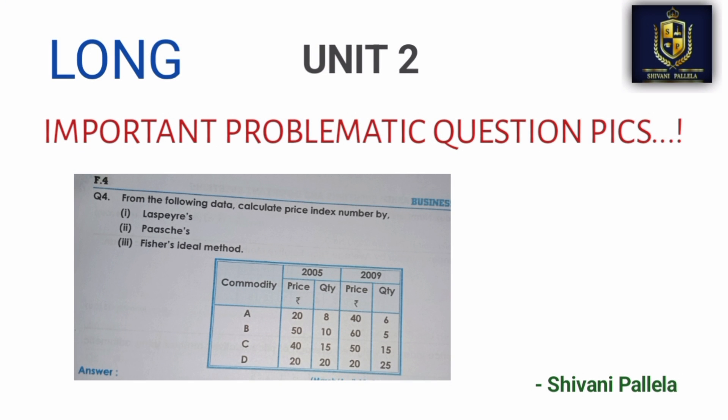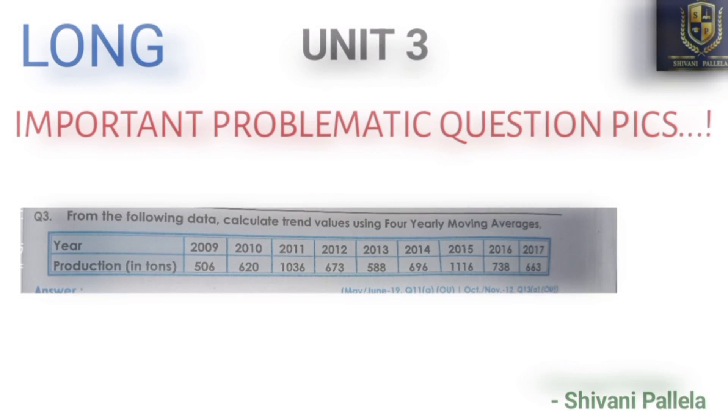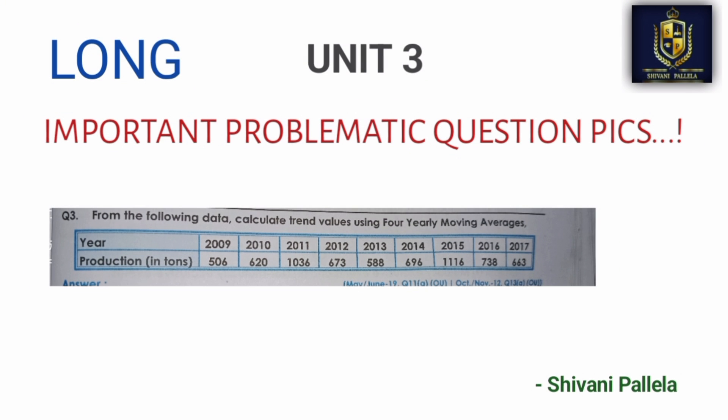If you neglect these, you can lose your marks. Without problematic Business Statistics 2 questions, you will lose a lot of marks. Now we are going to go to Unit 3. Unit 3 is about the 4-year moving average.